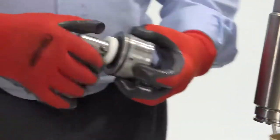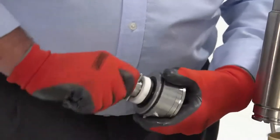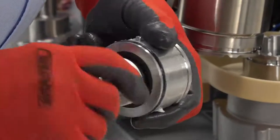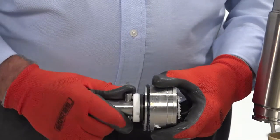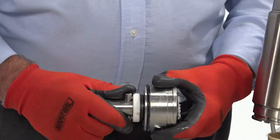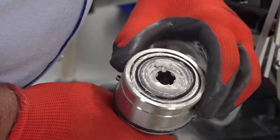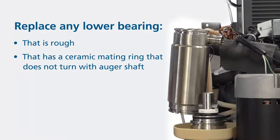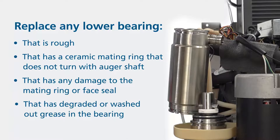Test the lower bearing by pressing down firmly on the shaft and turning the shaft. It should turn smoothly with no roughness or flat spots. Rotate the shaft and verify that the ceramic mating ring turns with the shaft. Rotate the assembly and visually inspect the ceramic mating ring and the face seal for cracks, chips and imperfections. Visually inspect the condition of the grease at the open underside of the bearing assembly. Replace any lower bearing that is rough, has a ceramic mating ring that does not turn with the auger shaft, has any damage to the mating ring or face seal, or has degraded or washed out grease in the bearing.